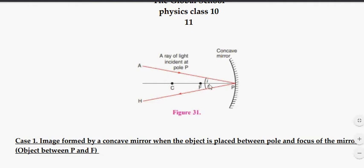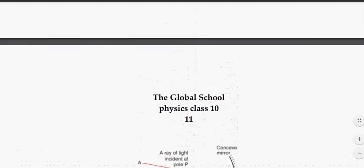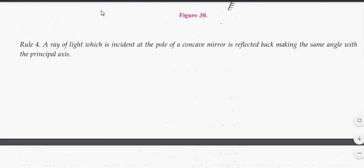The rule number 4: If a ray of light is incident at the pole of a concave mirror is reflected back by making the same angle with the principal axis.